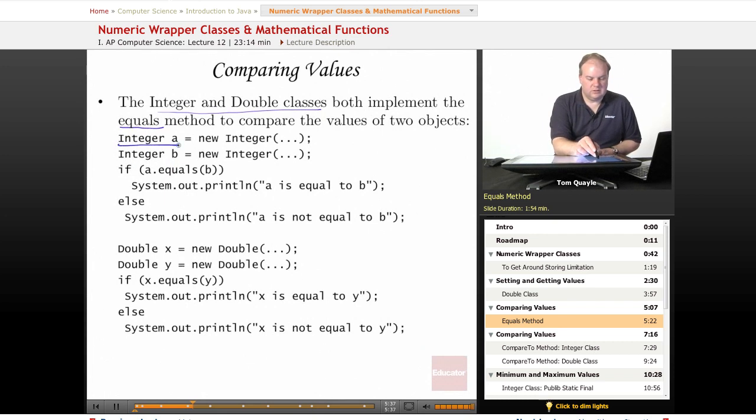And in this case, if I create a new Integer object a and set it to some value, and I create another Integer object b and set it to some value, I can use the equals method of either one of these Integer objects. And if I call a.equals and pass b, this will evaluate the numeric value that's stored inside the Integer object a and compare it with the numeric value that's stored inside the Integer object b. And if they're numerically equal, then this will evaluate to true and my if statement will run the if part and say a is equal to b. If they're not numerically equal, then this will evaluate to false and I'll come down here to the else part and it would print a is not equal to b.